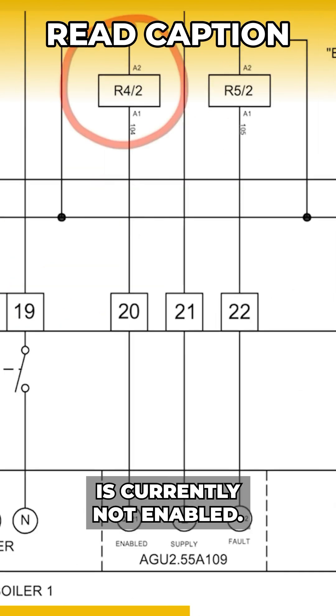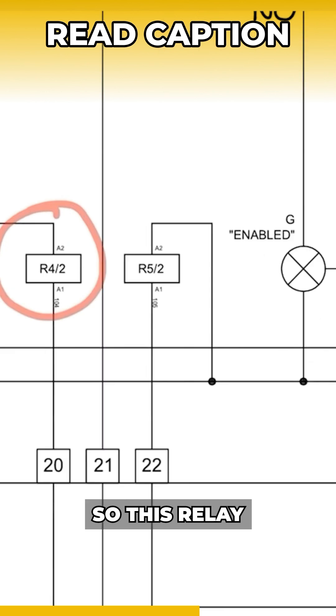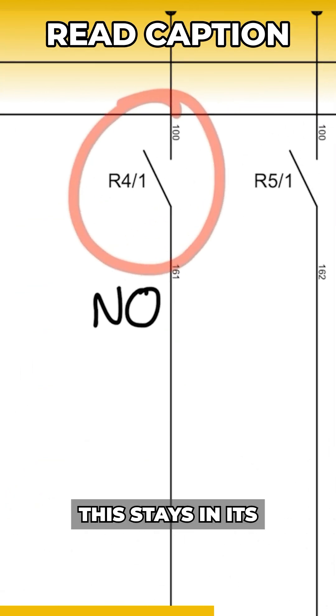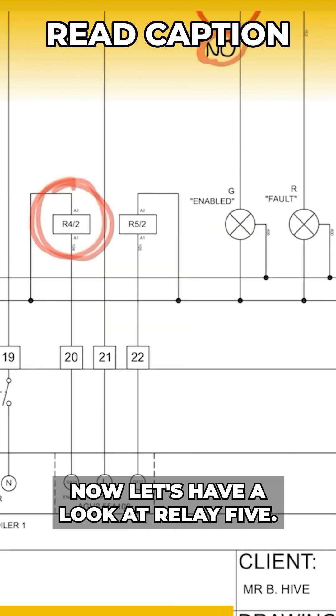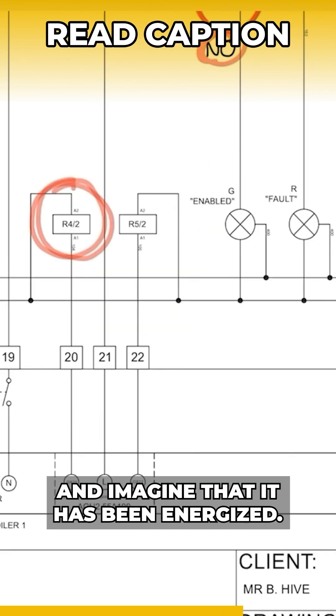In terms of the project, the boiler is currently not enabled, so this relay doesn't energize, which means that this stays in its normally open state. Now let's have a look at relay five and imagine that it has been energized.